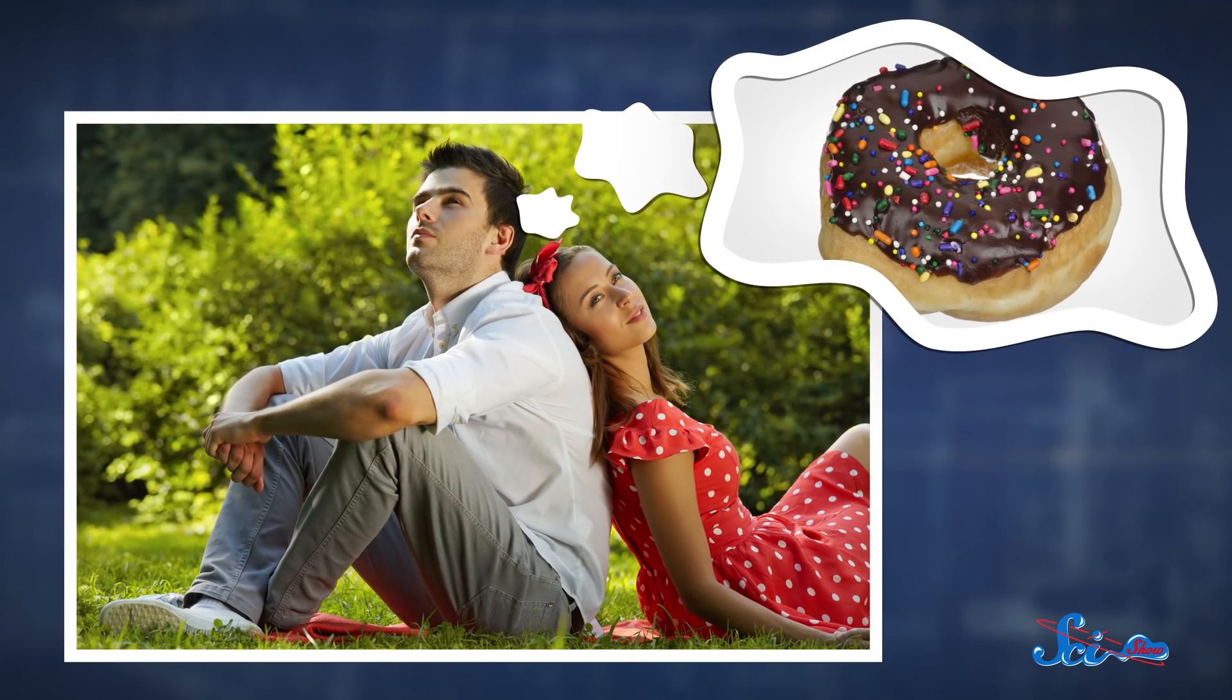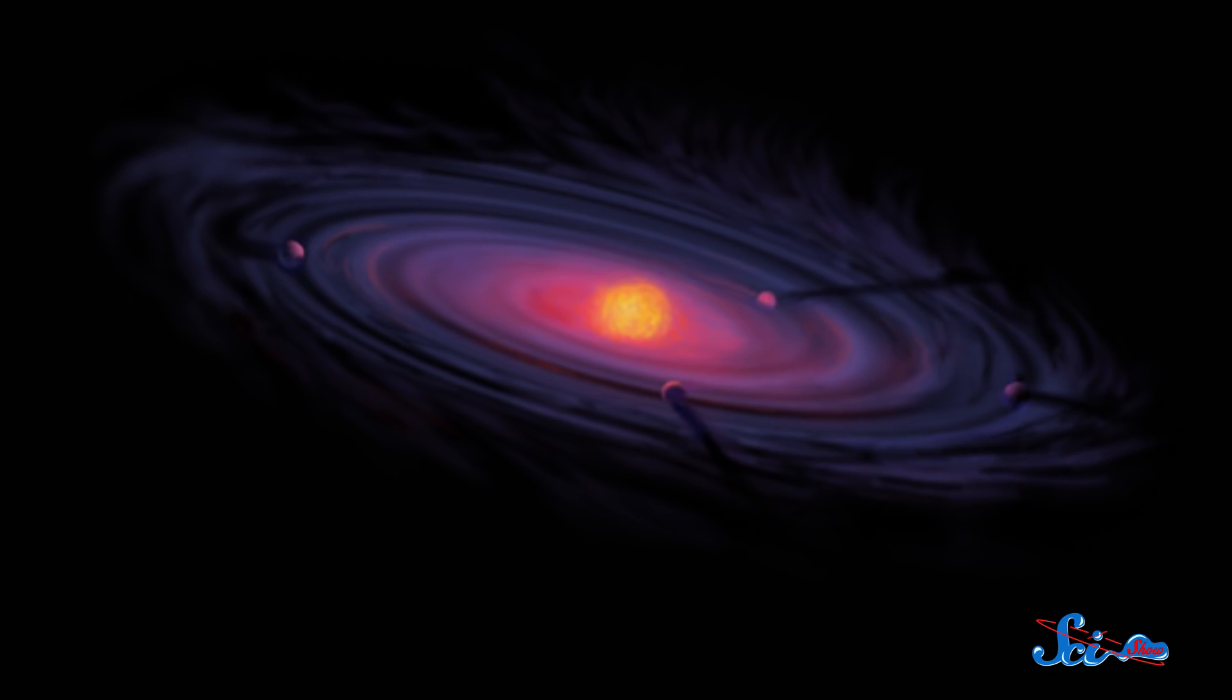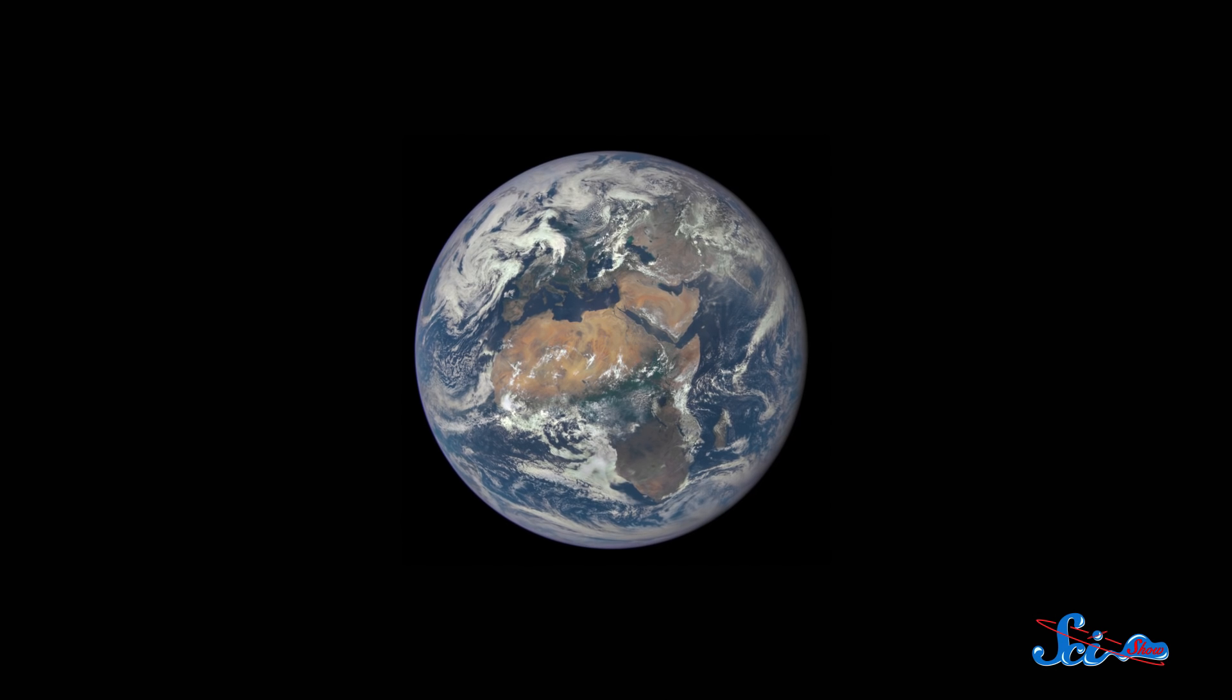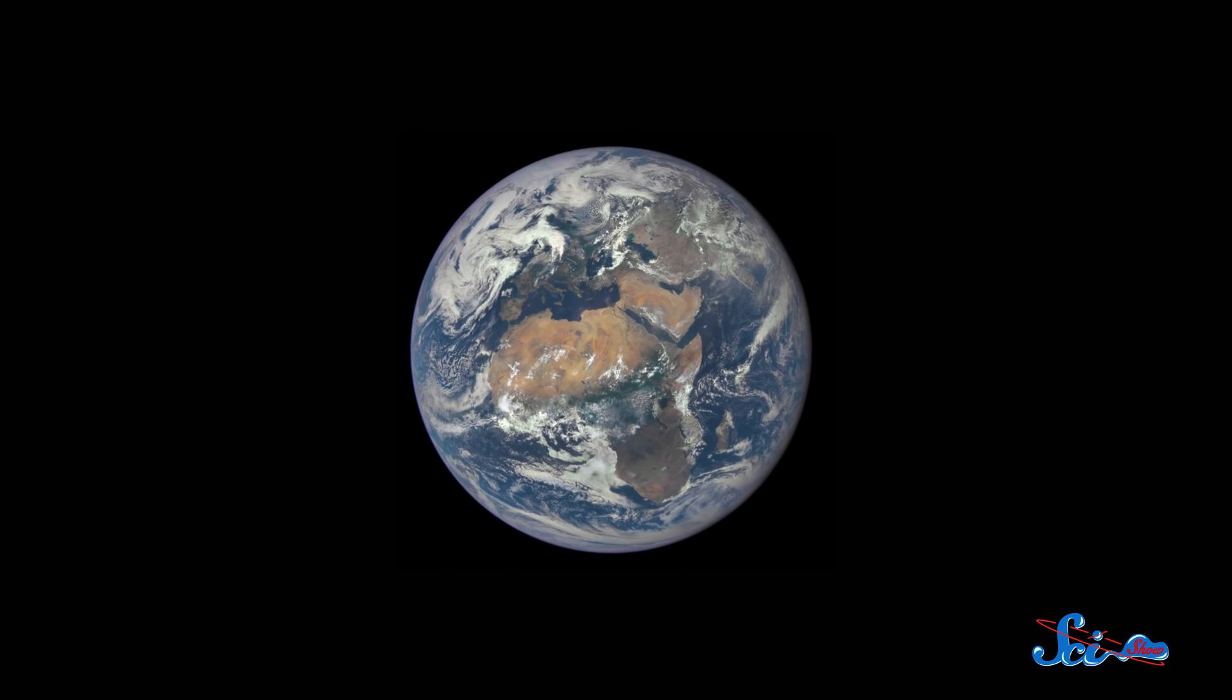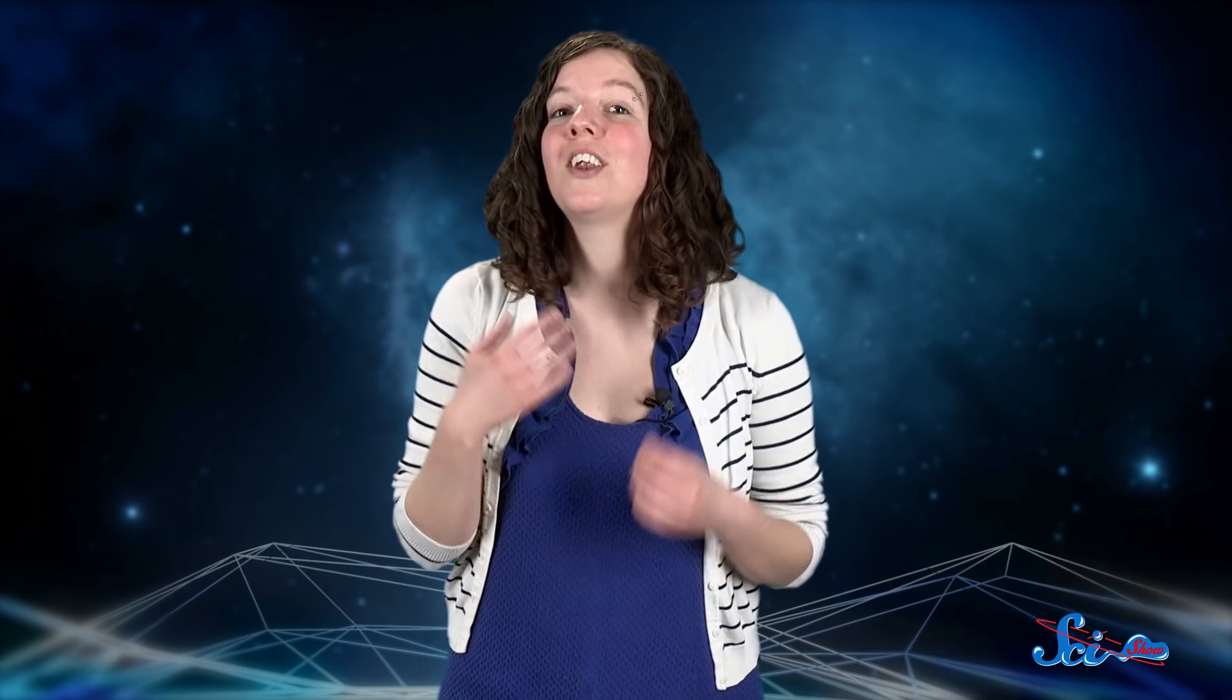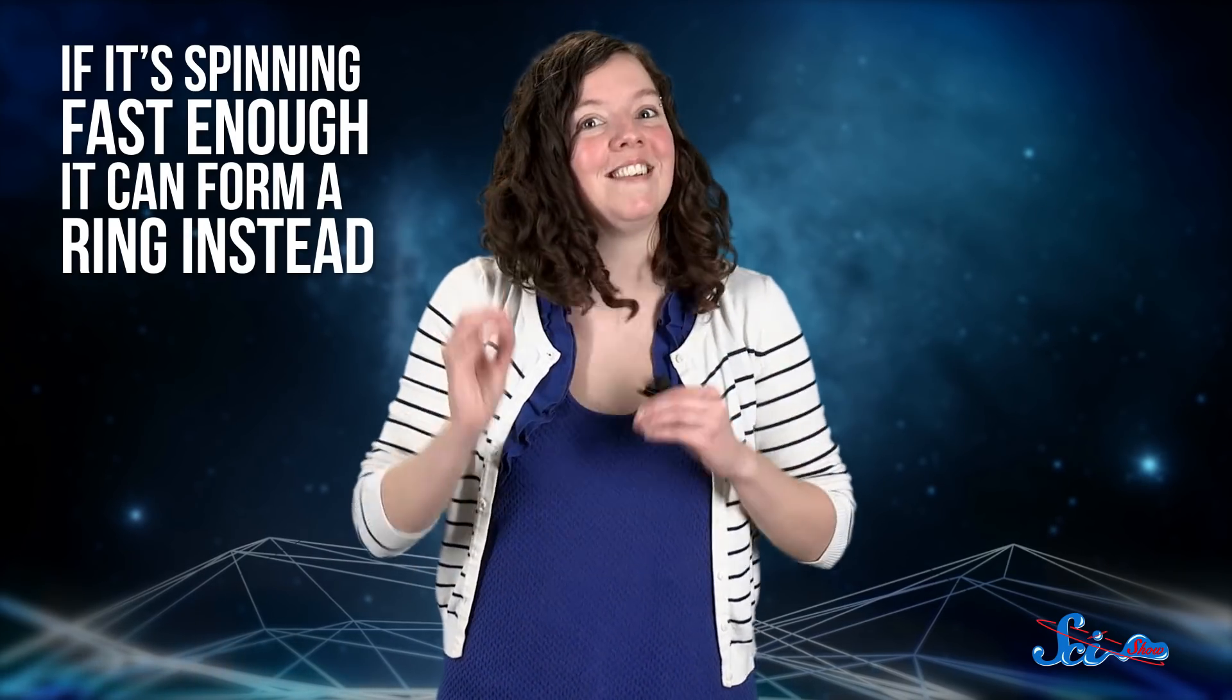Planets generally form from spinning disks of gas and dust that get clumped together by gravity. And normally, that clump just gets bigger and bigger, until it becomes mostly spherical. But based on computer simulations that physicists have put together, we know that if one of these clumps is spinning fast enough, it can form a ring instead.